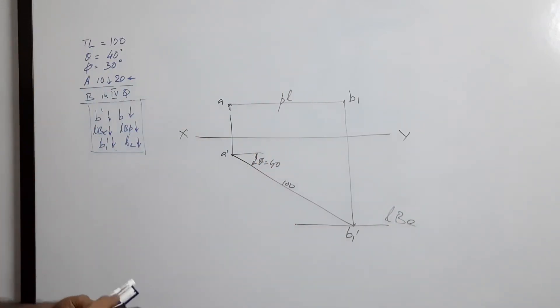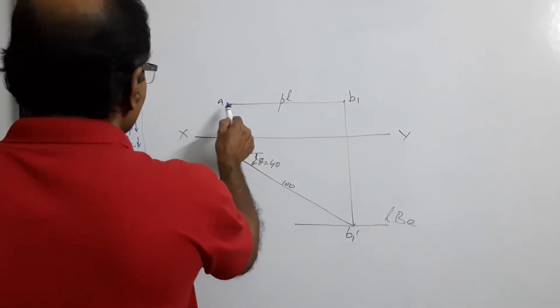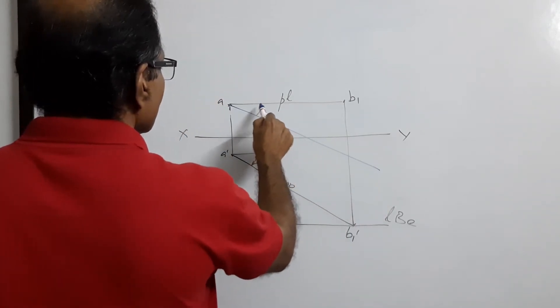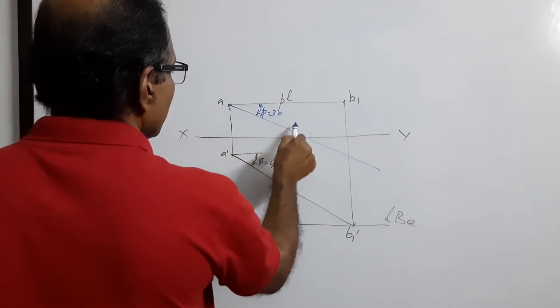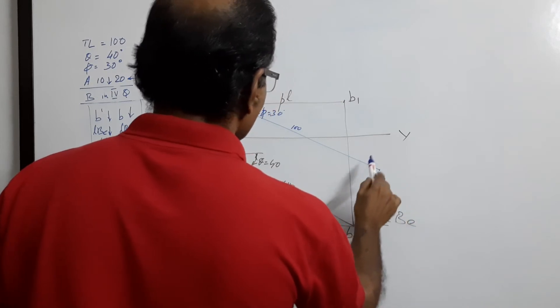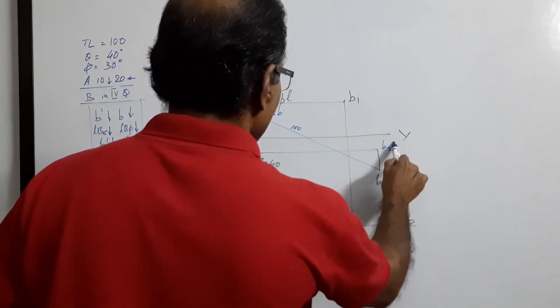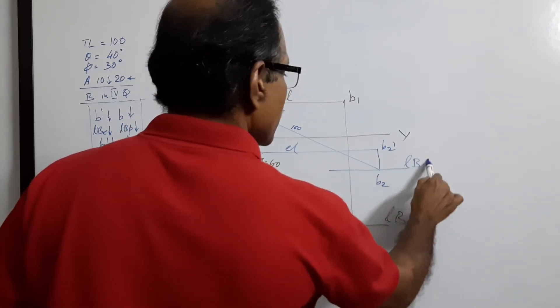Then at A draw a 30 degree line downwards. Phi equals 30, 100, B2. B2 dash elevation length LBP.